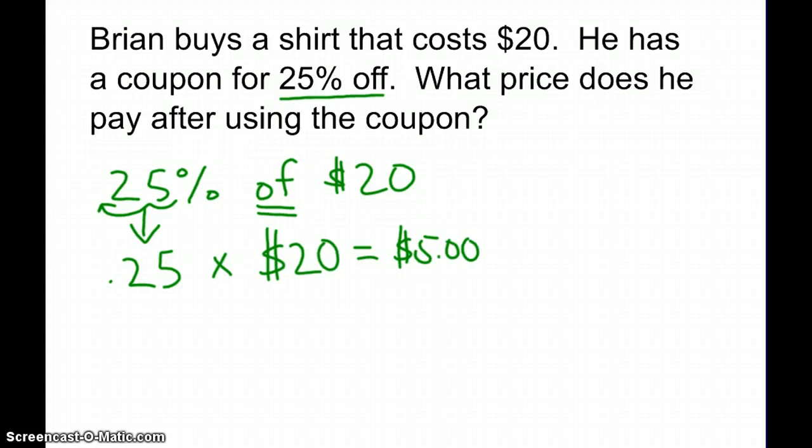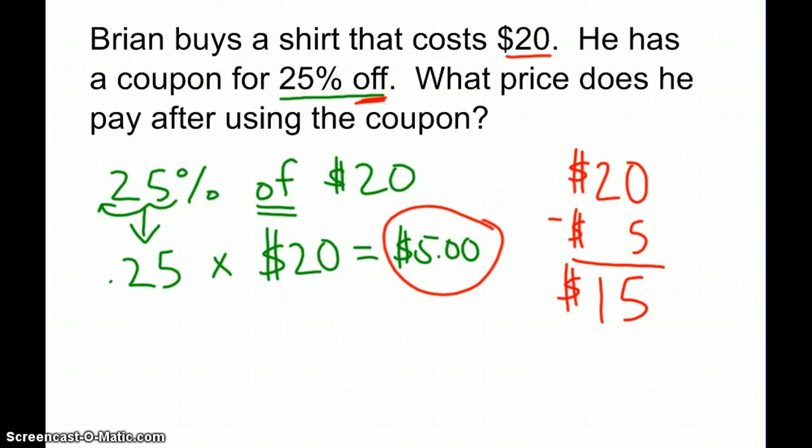So the total amount that we're going to take off of the $20 is $5. So now we are going to do $20 minus $5, and that is going to give us $15. So the total price that Brian pays after using the coupon is $15. Good luck.